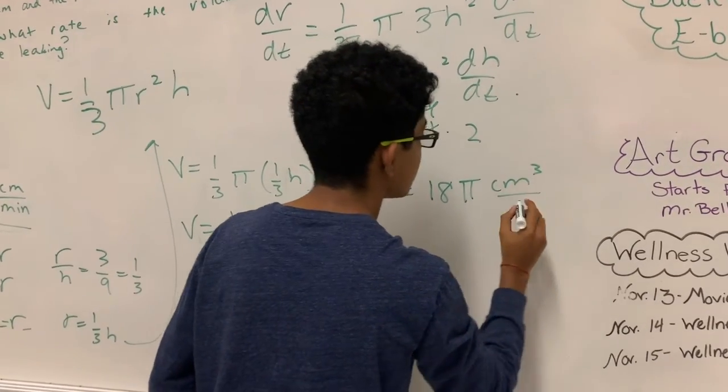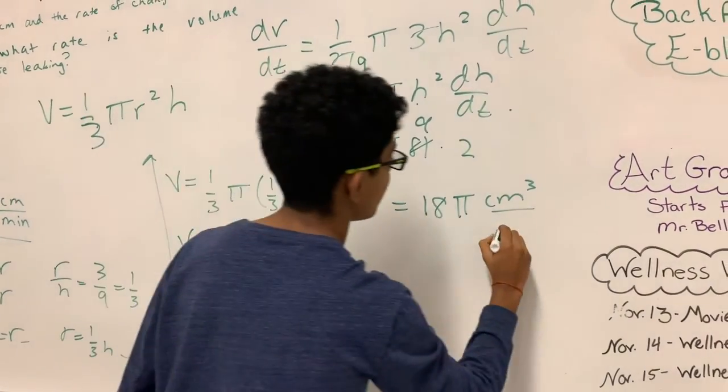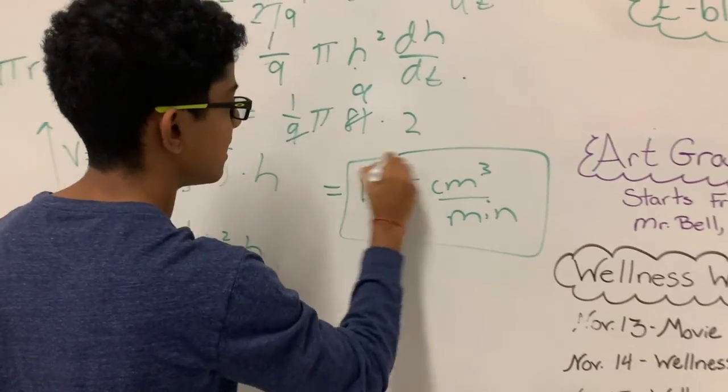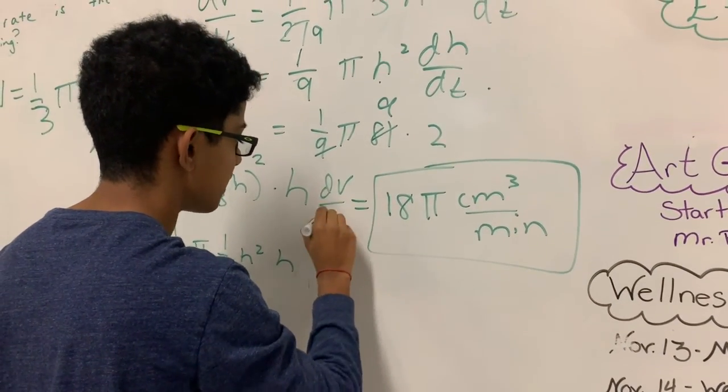But since it's volume, it's going to be centimeter cubed, very important. So centimeter cubed per minute, that is your dv over dt. Thank you.